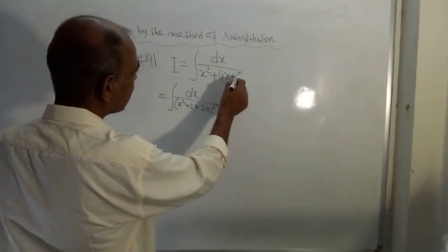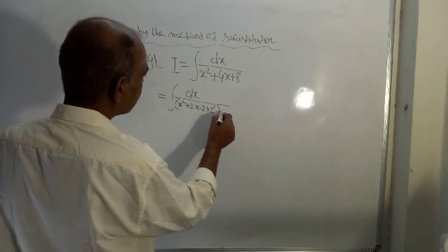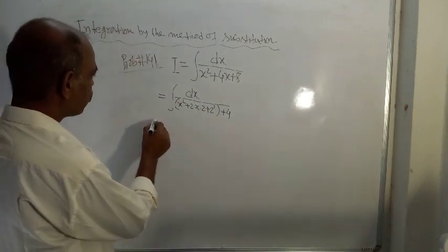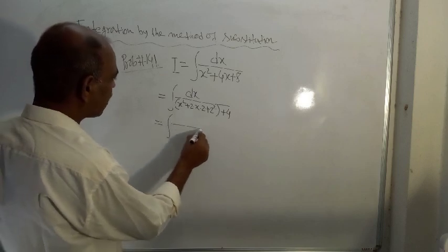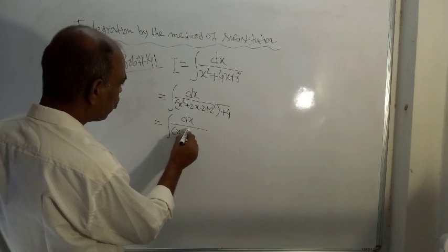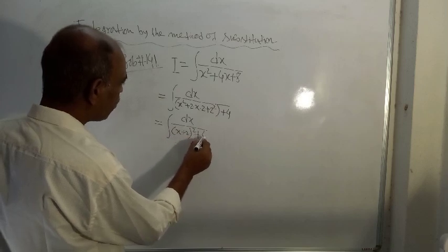So this is 4, here it is 8, so plus 4. So this becomes 8. So this is equal to integration of dx divided by x plus 2 whole square plus 4.